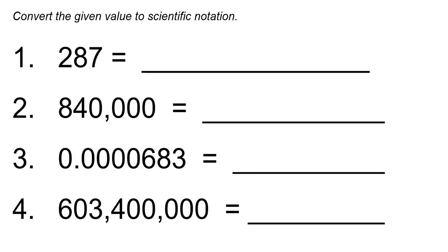First, let's start by getting a number between 1 and 10. So 287 is not between 1 and 10, so we start by moving the decimal point until we have a number between 1 and 10. If there's no decimal point visible in the number, like in number one — 287 — the decimal point is all the way to the right at the end of the number.